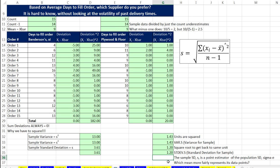The more reliable supplier is plywood and floor. On average, they have a deviation of 1.2 days. On average, Banderson has a deviation of 3.61. We are using the numerical measure, standard deviation of the sample, to measure variation to make a business decision.